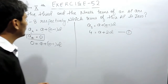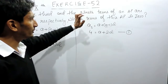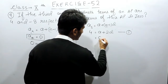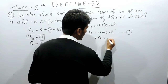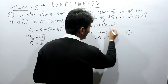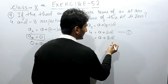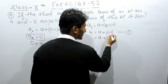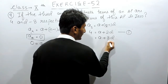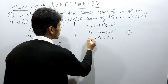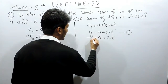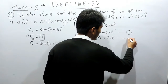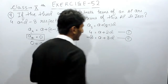Similarly, the ninth term is given to us. The ninth term would be a plus 8d, because 9 minus 1 is 8, and the ninth term equals minus 8. So: a plus 8d equals minus 8. This is our second equation.